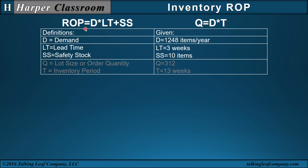Here we have the ROP equation and the lot size equation. Assume that we have a given demand of 1,248 items a year, a lead time of 3 weeks, safety stock of 10 items, a lot size of 312, and an inventory period of 13 weeks.